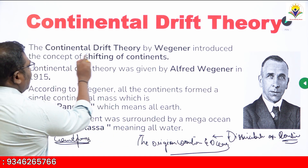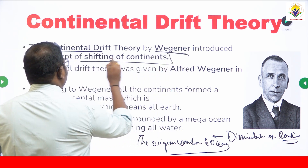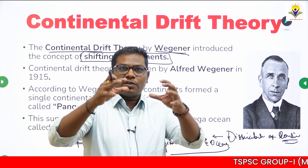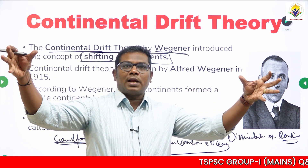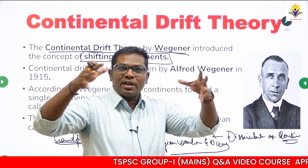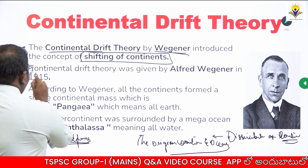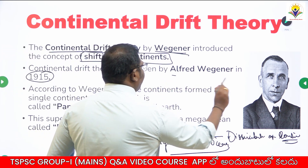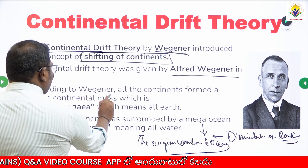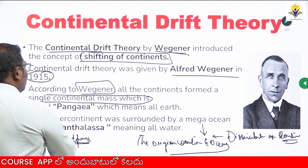Continental Drift Theory was proposed by Alfred Wegener. The continents are still moving away from each other. In 1915, Alfred Wegener published 'The Origin of Continents and Oceans.' According to Wegener, all the continents earlier were formed into a single landmass.